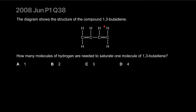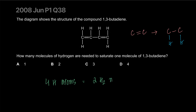The diagram shows the structure of the compound 1,3-butadiene. The 'diene' implies two double bonds — 'di' means two. How many molecules of hydrogen are needed to saturate one molecule? Each carbon-carbon double bond requires two hydrogen atoms. You have two double bonds, so you'll require four hydrogen atoms, and you get four atoms from two hydrogen molecules. So you'll need two molecules. The correct answer is B.